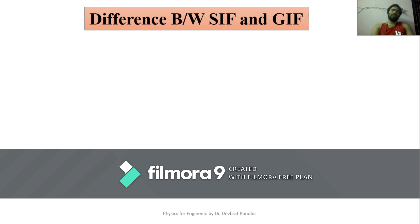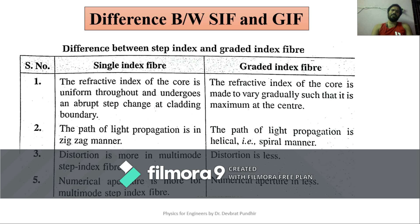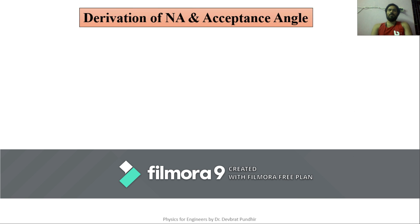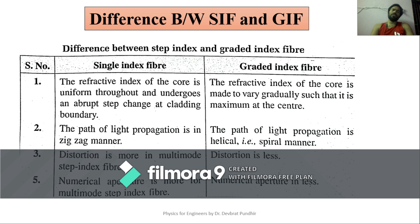The key difference between step index and graded index fiber: in step index, the refractive index of the core is uniform and light travels in a zigzag manner, while in graded index it is non-uniform and light moves in a helical shape. Dispersion is more in step index fiber and less in graded index. Numerical aperture is large in step index and smaller in graded index. This concludes the classification of optical fiber; in the next lecture we will cover other topics of this unit including derivations and numericals.